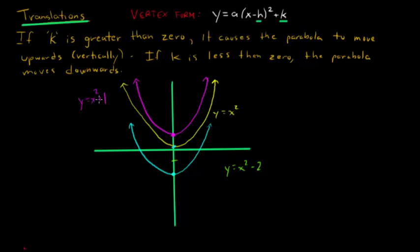So k, which is when the number is being added or subtracted from x squared, is just going to move the parabola up or down. So that's the k here in vertex form.